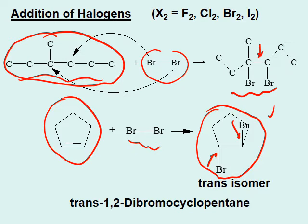Even though anti addition also happened in the first case, it doesn't give a trans isomer because it forms a single-bonded compound with no restriction of rotation, so the product is the same regardless.